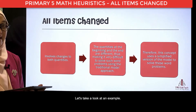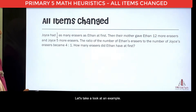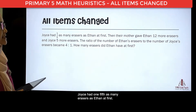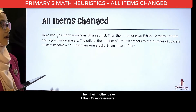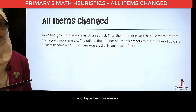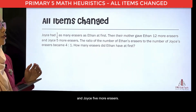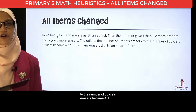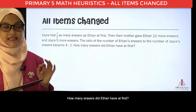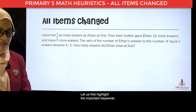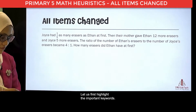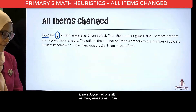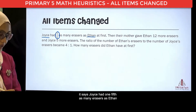Let's take a look at an example. Let's read the question together. Joyce had one-fifth as many erasers as Ethan at first. So, from the first statement, it says Joyce had one-fifth as many erasers as Ethan at first.